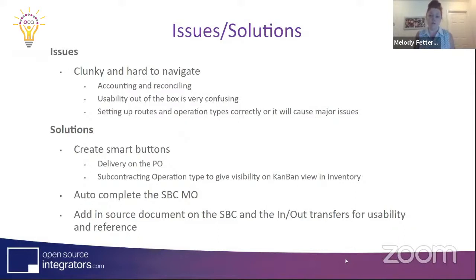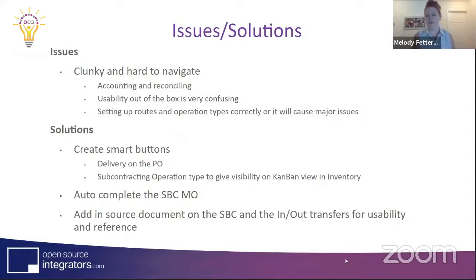That manufacturing order gets closed based on configuration — automatically when parts are received back into the OEM. Setting up routes and operations is extremely important. We found through extensive testing and client walkthroughs that if your routes aren't set up correctly, nothing will happen or you'll receive errors. If your operation types and routes aren't configured correctly, you won't get an outbound transfer — you'll have an inbound transfer to receive products back in but never an outbound to actually send raw material out to the subcontractor.